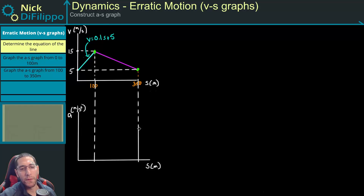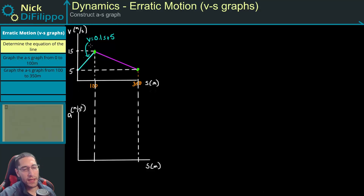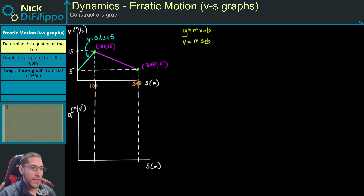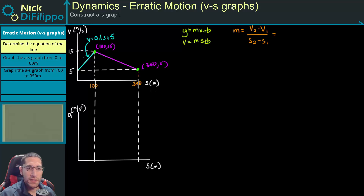The first thing I'm going to do is figure out the equation of this line between two points. One of these points is (100, 15) and the other point is (350, 5). Now that we have two points and a straight line, we can fit it to v = ms + b. So the slope m equals v2 minus v1 divided by s2 minus s1, which is 5 minus 15 divided by 350 minus 100.